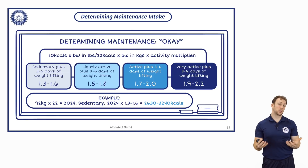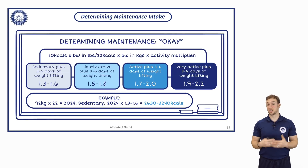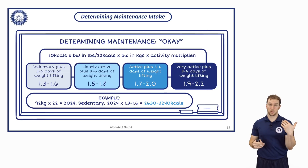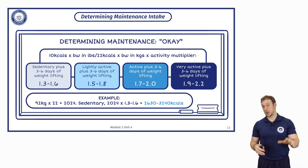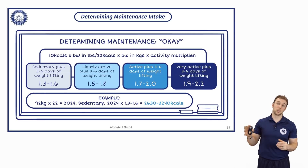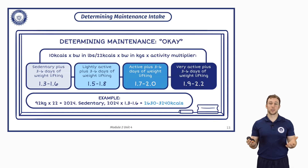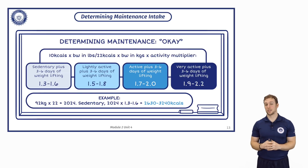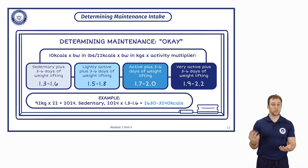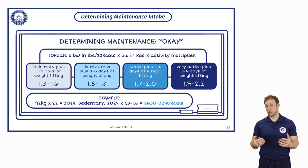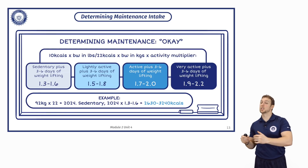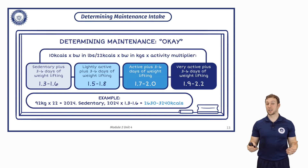For example, if we had a 92 kilogram male with a sedentary lifestyle who trains three to six days per week and we use a multiplier of 1.3 to 1.6, that results in a range of anywhere between about 2,600 calories up to 3,200 calories — a 600 calorie spread. If the person's actual total energy expenditure was 2,600 and you put them on 3,200, they'd start gaining weight quickly. Likewise, if their expenditure was 3,200 and you put them on 2,600, that would actually be a cut diet for them.